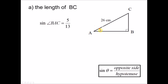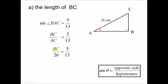For angle BAC, the opposite side is BC and the hypotenuse is the longest side opposite the right angle, which is AC equals 26. So we rewrite sine BAC as BC over AC, which equals 5 over 13. Substituting AC as 26, we have BC over 26 equals 5 over 13. We move 26 to the right and multiply: 5 over 13 times 26, giving BC equals 10. The length of BC is 10 centimeters.